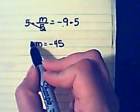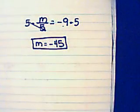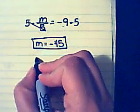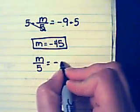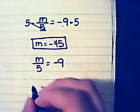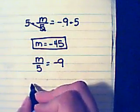But I'm not done. Now that I know that m equals negative 45, I can plug it back into my original equation to make sure it works. So my original equation was m divided by 5 equals negative 9. Now that I know that m is negative 45, I can change the m to negative 45 in my equation.